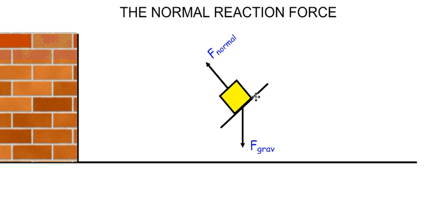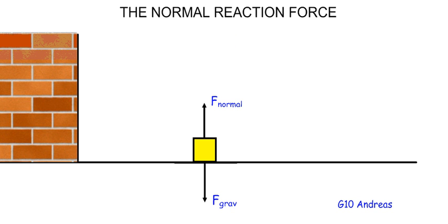So, if the surface in contact were tilted, the normal force will still act perpendicularly away from the surface in contact, and the gravitational force will still act vertically downwards. It is important to understand the nature of the normal force, because as we shall see later, it will influence the frictional force.